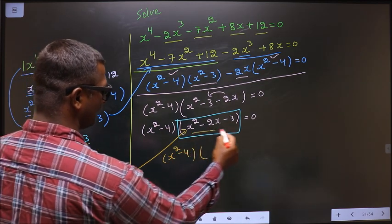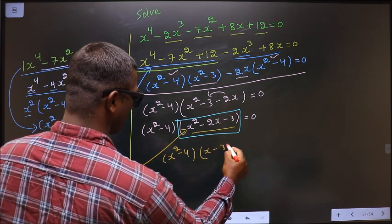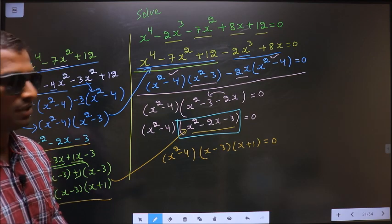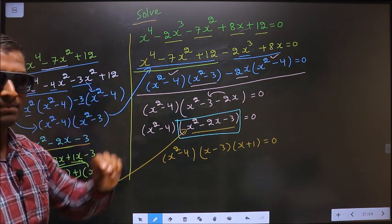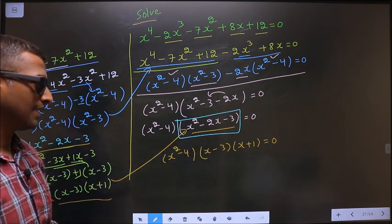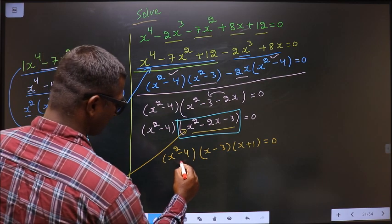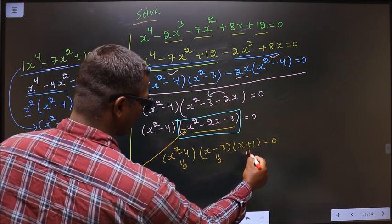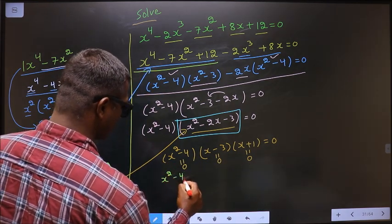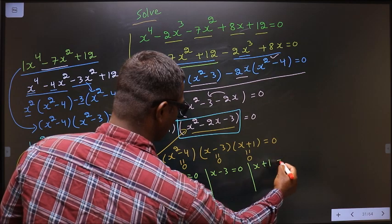So now replacing the quadratic with its factors, the full factored equation is: (x² - 4)(x - 3)(x + 1) = 0. Since the product of these brackets equals 0, I equate each bracket to 0: x² - 4 = 0, or x - 3 = 0, or x + 1 = 0.